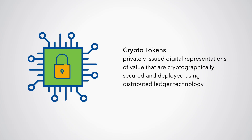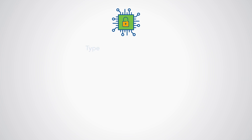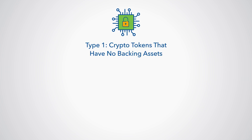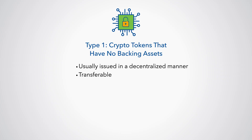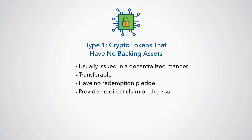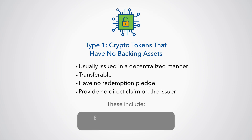There are many types of crypto tokens, but we can bucket them into three main categories. First, are crypto tokens that have no backing. They're usually issued in a decentralised manner, are transferable, have no redemption pledge, and provide no direct claims on the issuer. These include Bitcoin, Ether, Dogecoin, and many more.